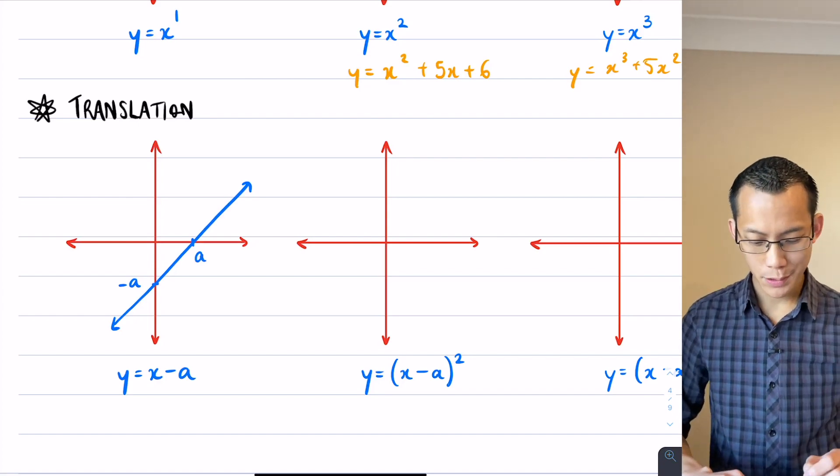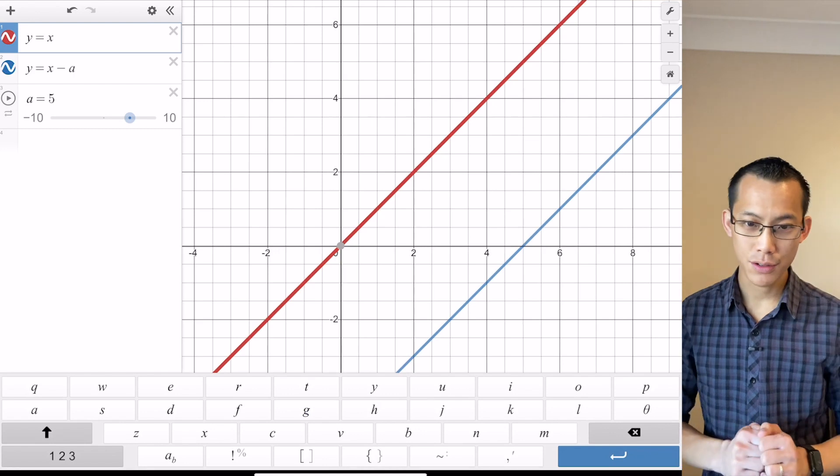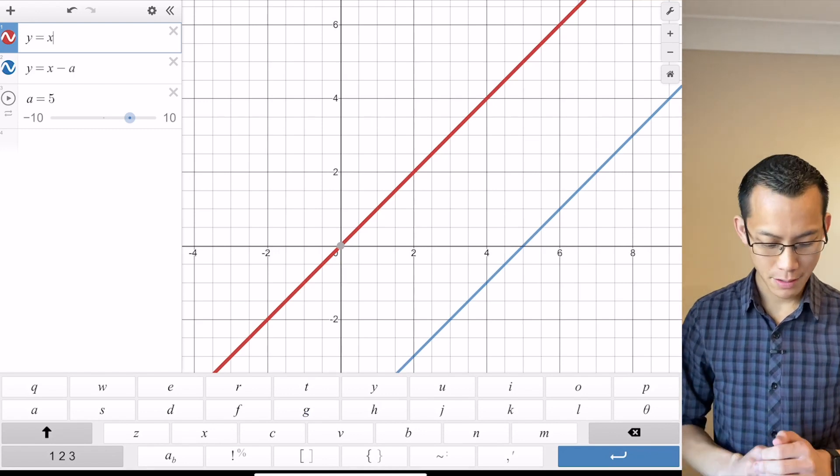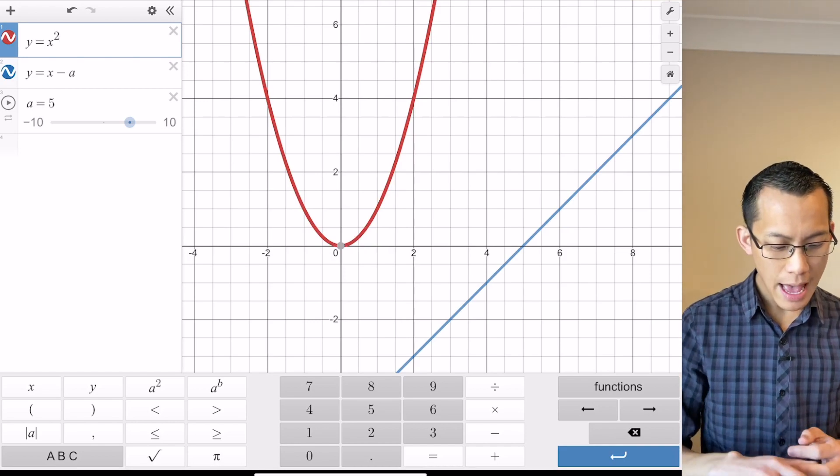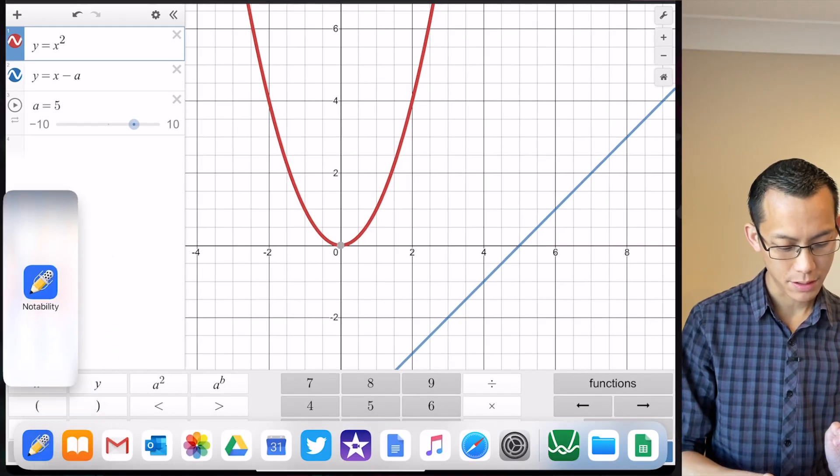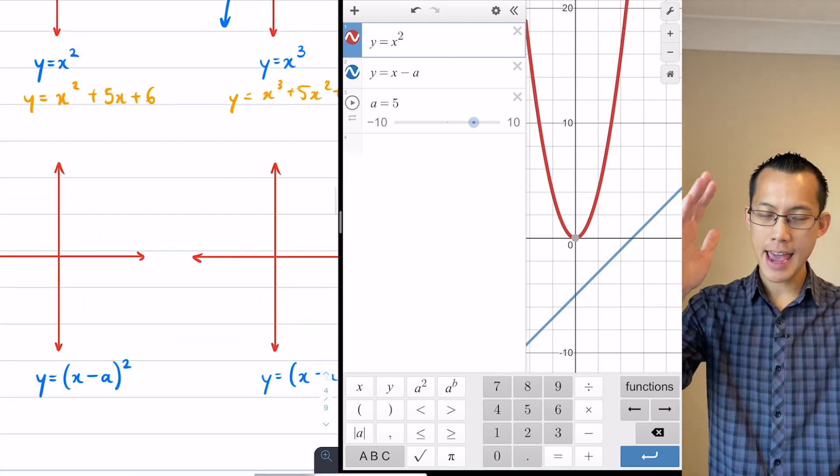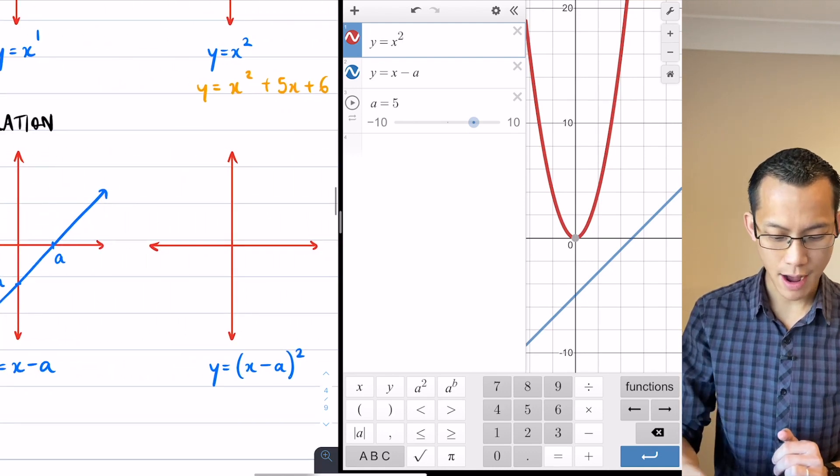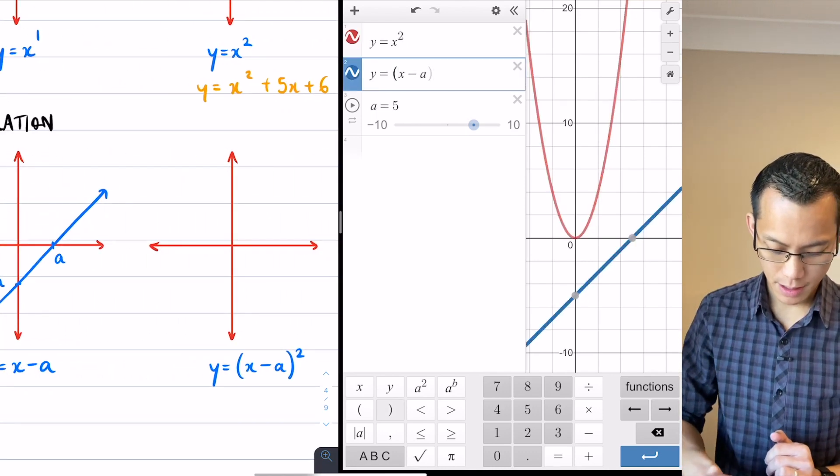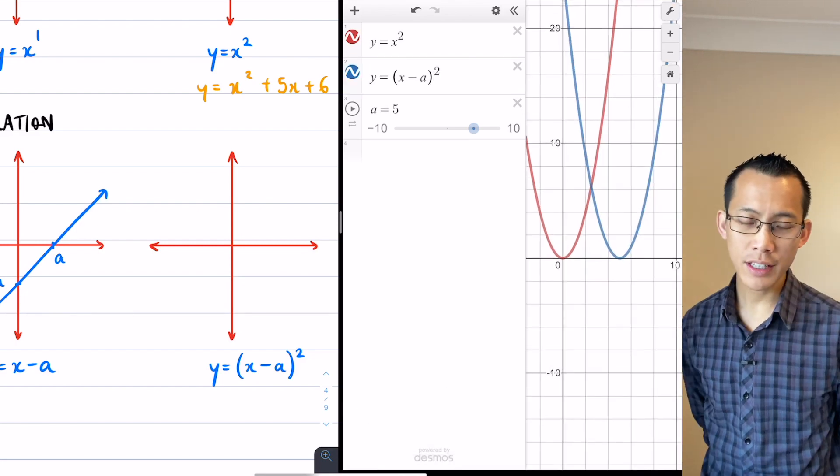What would we expect when we do the parabola? Well again we can explore this over here. What I'm going to do is I'm going to take that y equals x and I'm going to square it. So there's the parabola that we had before and then what I'm going to do here is say x minus a, I'm going to put brackets around the whole thing and I'm going to square the entire expression on the right hand side.